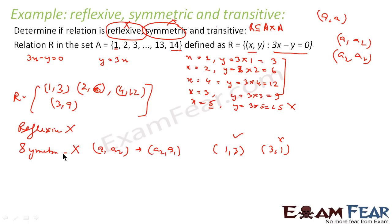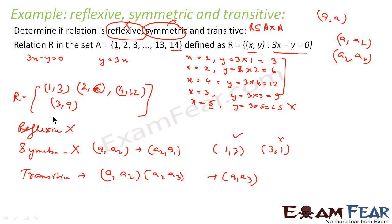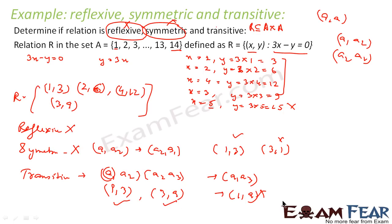The third property is transitive. For transitive, if (a1, a2) is there and (a2, a3) is there, this should imply (a1, a3) is also there. If we take (1,3) and (3,9), then (1,9) should be implied. But (1,9) is not there in this set. Since (1,9) is not there, we can say that this relation is not transitive either.